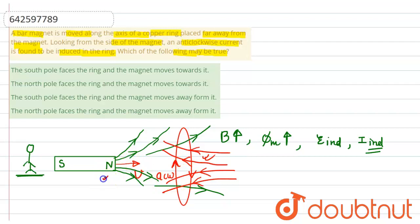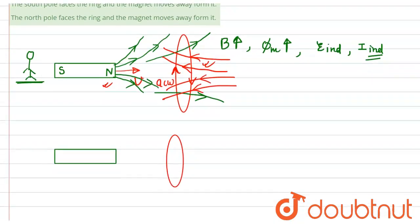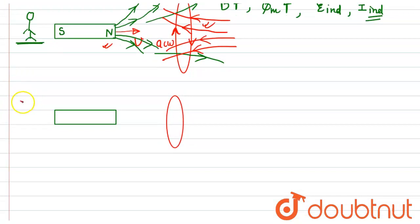So we can say that the north pole of the bar magnet is approaching the ring — the north pole faces the ring and the magnet moves towards it. So option B is correct. Now let us talk about the next situation. Here the same observer is present, but now the south pole faces the ring and the north pole is at the back.